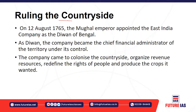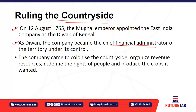The first topic is 'Ruling the Countryside.' The East India Company had basically set up their foot on the Indian subcontinent. On 12th August 1765, the Mughal Emperor appointed the East India Company as the Diwan of Bengal. After being appointed Diwan, the company had tremendous financial powers and became the chief financial administrator of the territory under its control. The company thus had wide powers but limited responsibility, which began the process of colonizing our country.